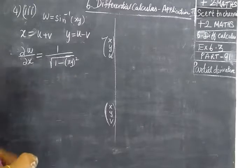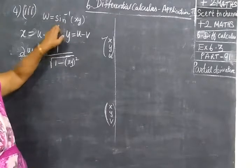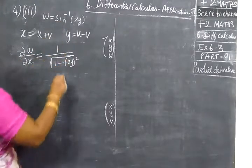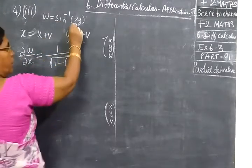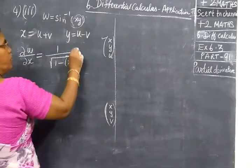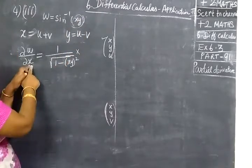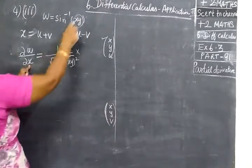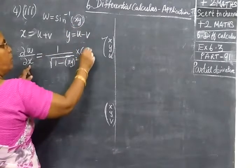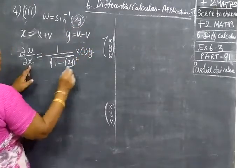Next, part 1. Differentiation is 1 by root of 1 minus x squared, into inner function. With respect to x you are doing. x and 1 is 5, so I apply.